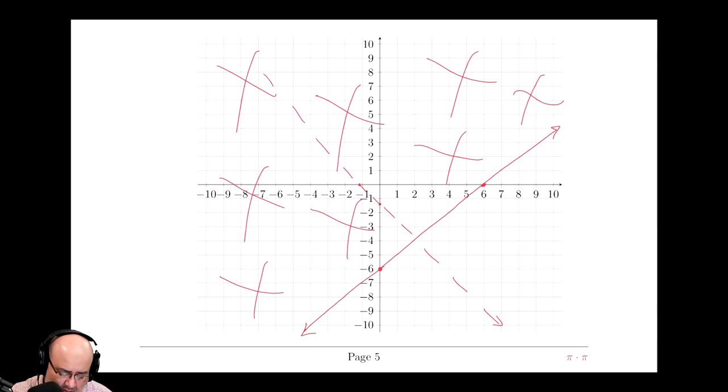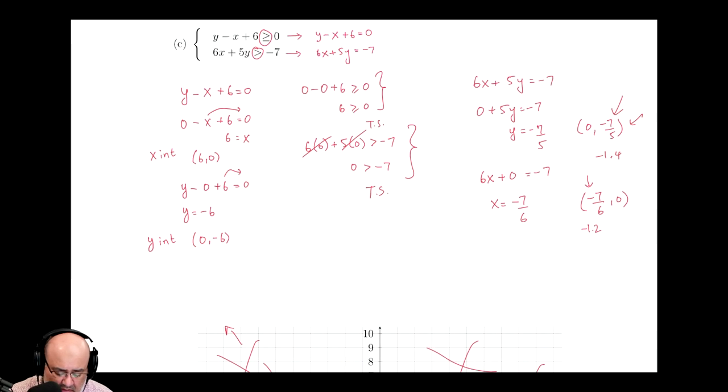Now I pick the origin again as a test point because it's not on the line. That testing is done right here. I end up with 0 is greater than negative 7. That's a true statement. 0 is indeed greater than negative 7.